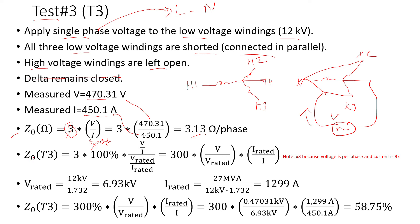The zero sequence impedance from Test 3 in percent is: 3 × 100% × (measured voltage / measured current), all divided by (rated voltage / rated current). Rearranging, that's 300 times the measured voltage divided by the rated voltage, times the rated current divided by the measured current.